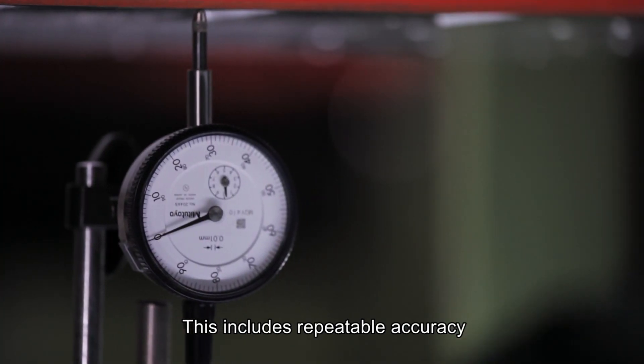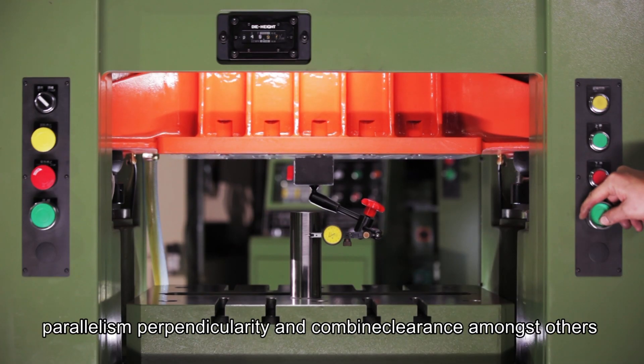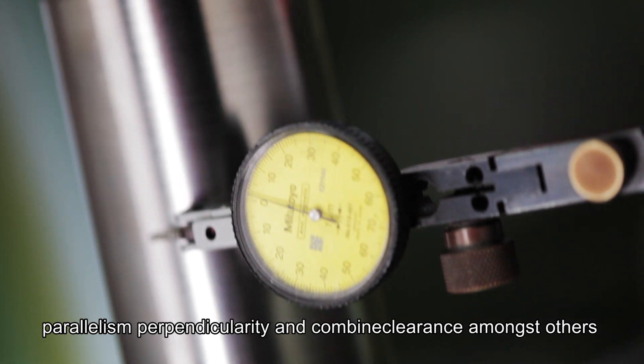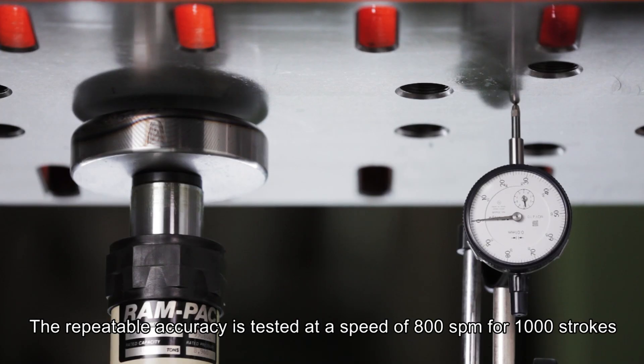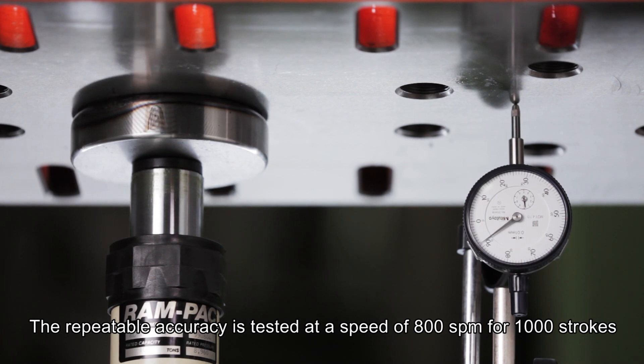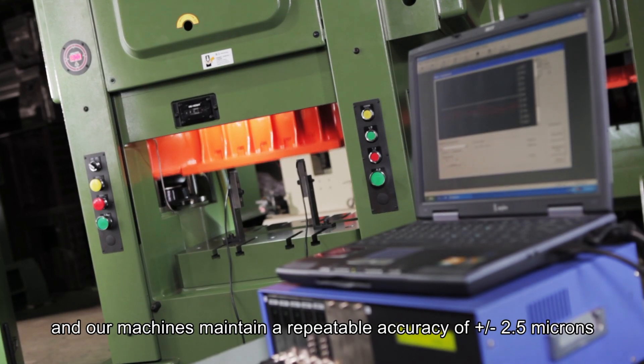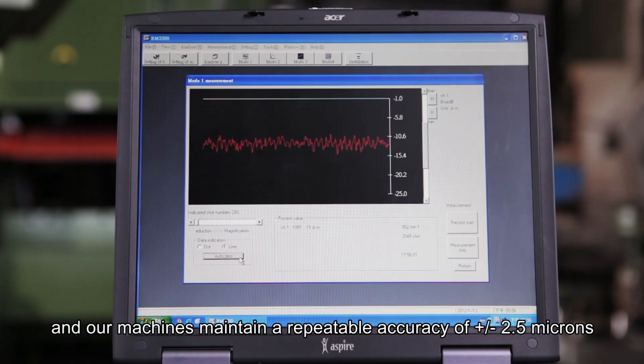This includes repeatable accuracy, dead center, and flatness, amongst others, to ensure JIS standards are maintained. The repeatable accuracy is tested at a speed of 800 strokes per minute for 1,000 strokes, and our machines maintain a repeatable accuracy of plus or minus 2.5 microns.